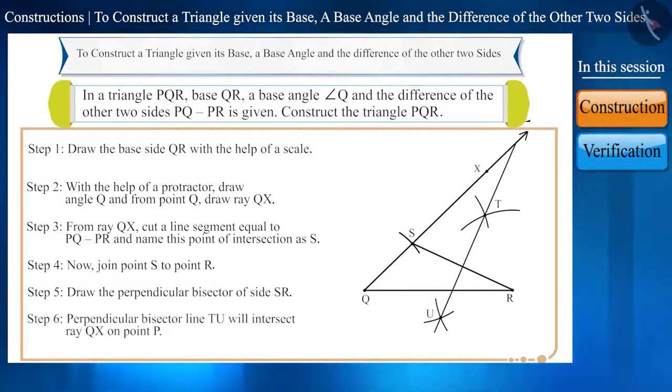Step 6. We can see that the perpendicular bisector line TU is intersecting ray QX and we will represent this point of intersection as P.